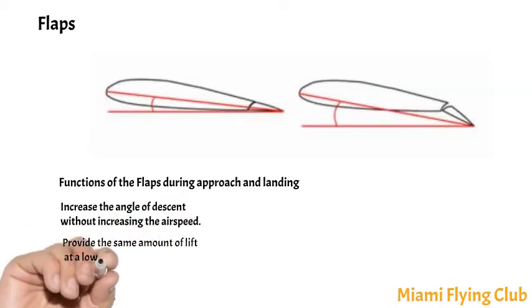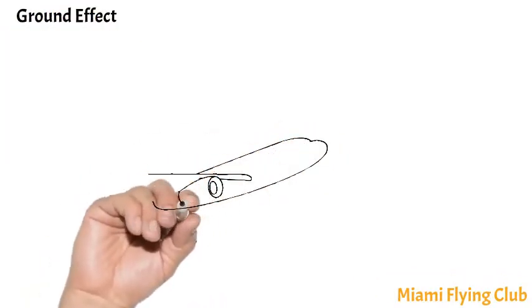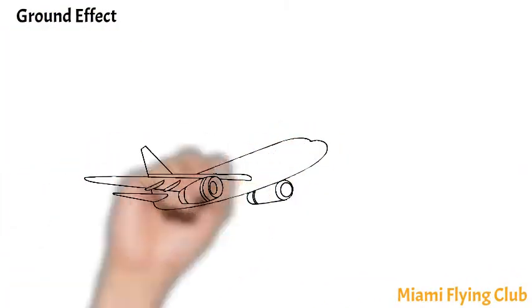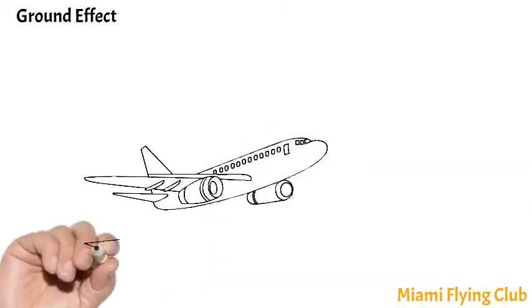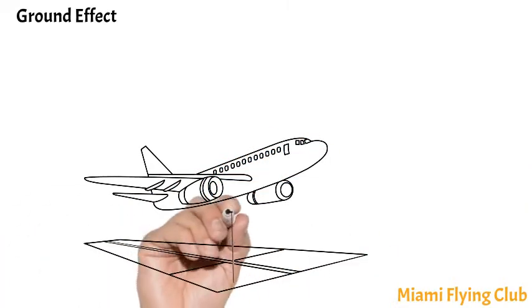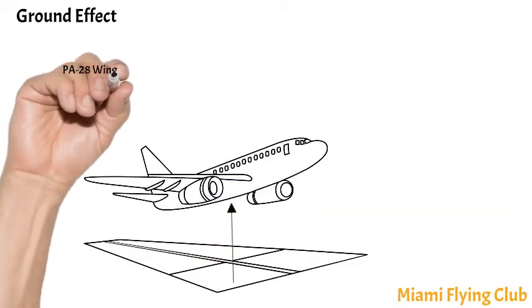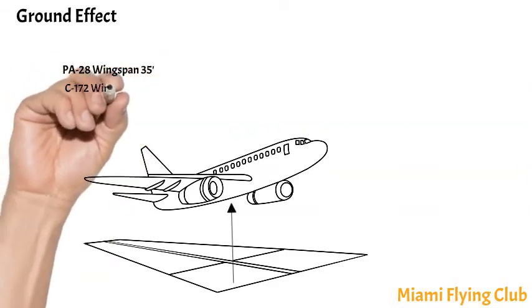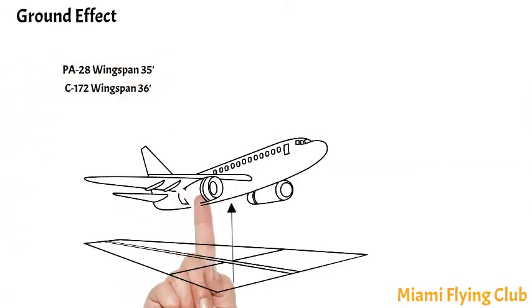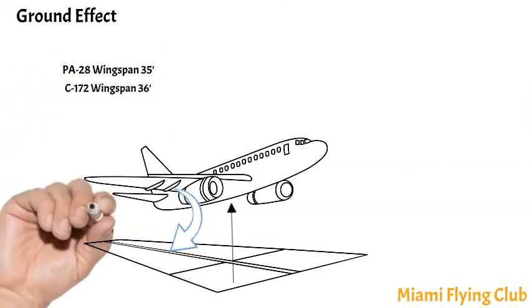Ground effect: ground effect occurs when flying within one wingspan or less above the surface. The airflow around the wing and wing tips is modified, and induced drag is reduced. Ground effect is the result of interference of the surface of the earth with the airflow patterns about an airplane.